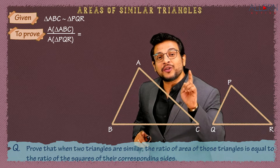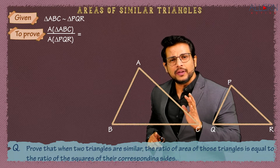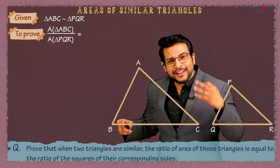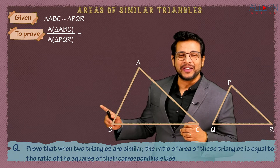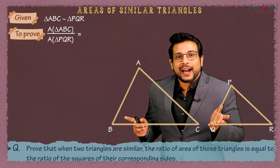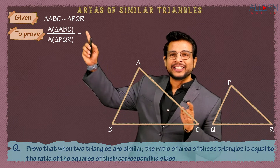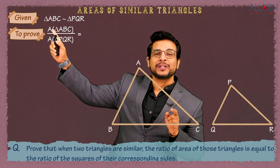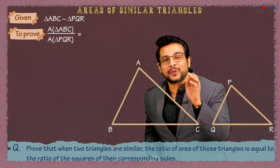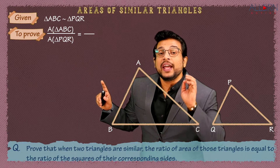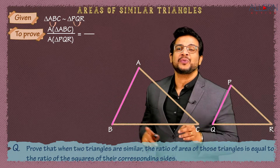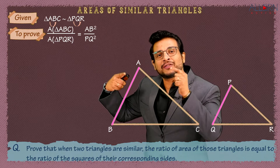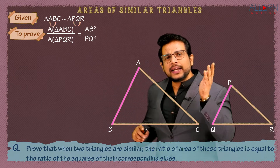When we say corresponding sides, we have three pairs of corresponding sides. We can easily pick them up from the given similarity. So it is equal to AB² upon PQ². Remember, it is the ratio of the squares of the corresponding sides.